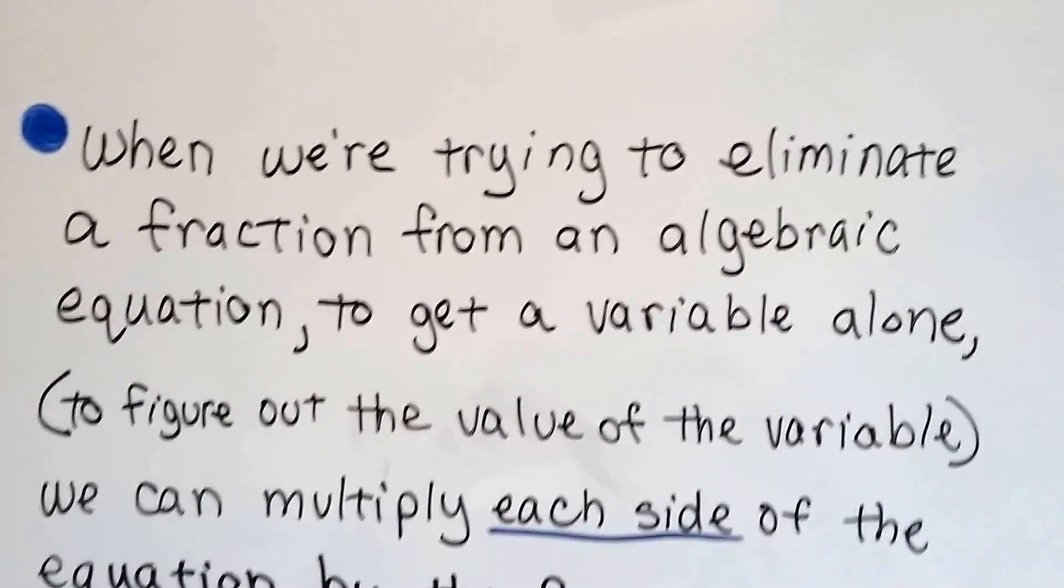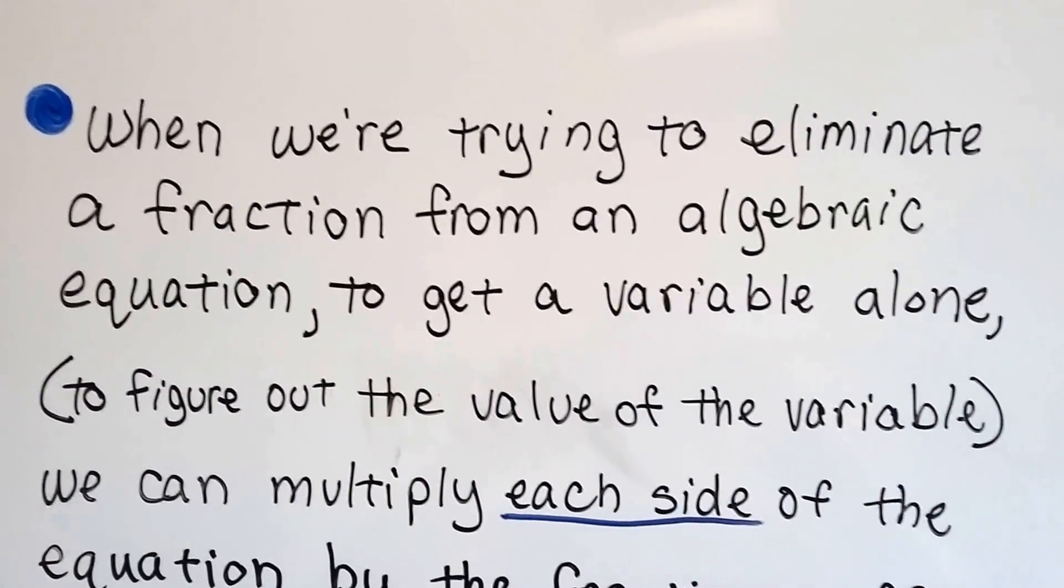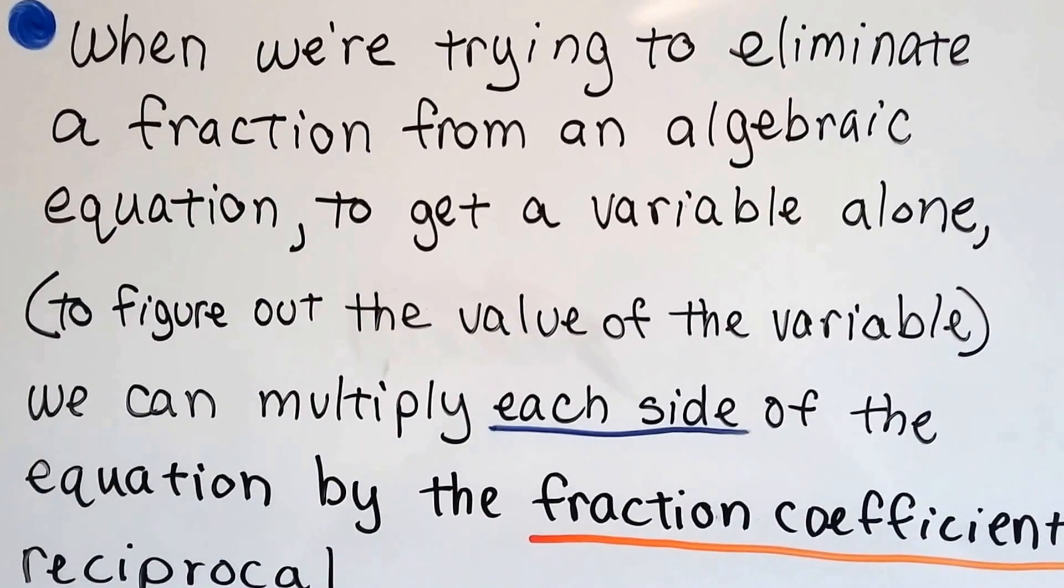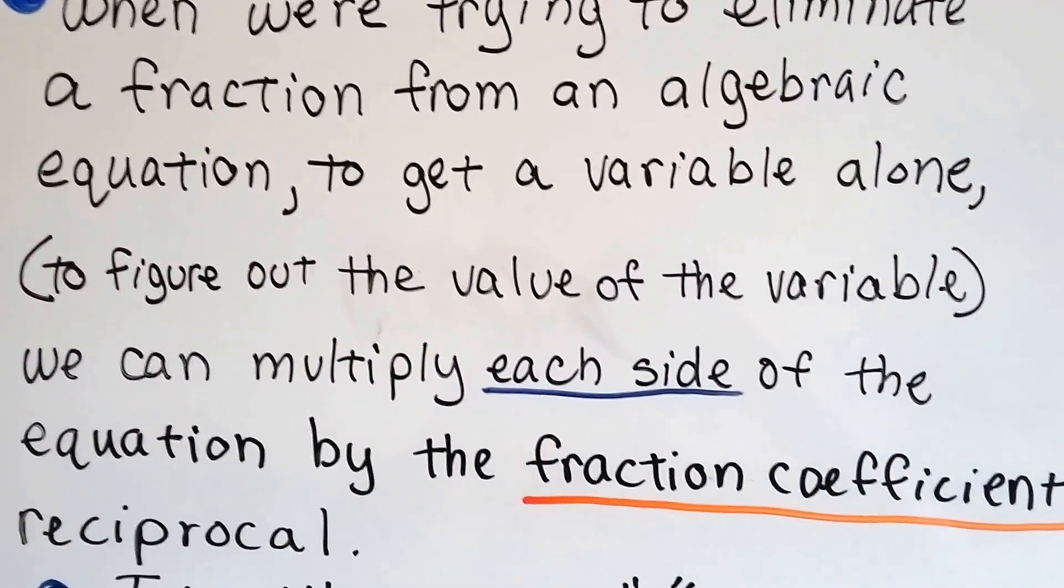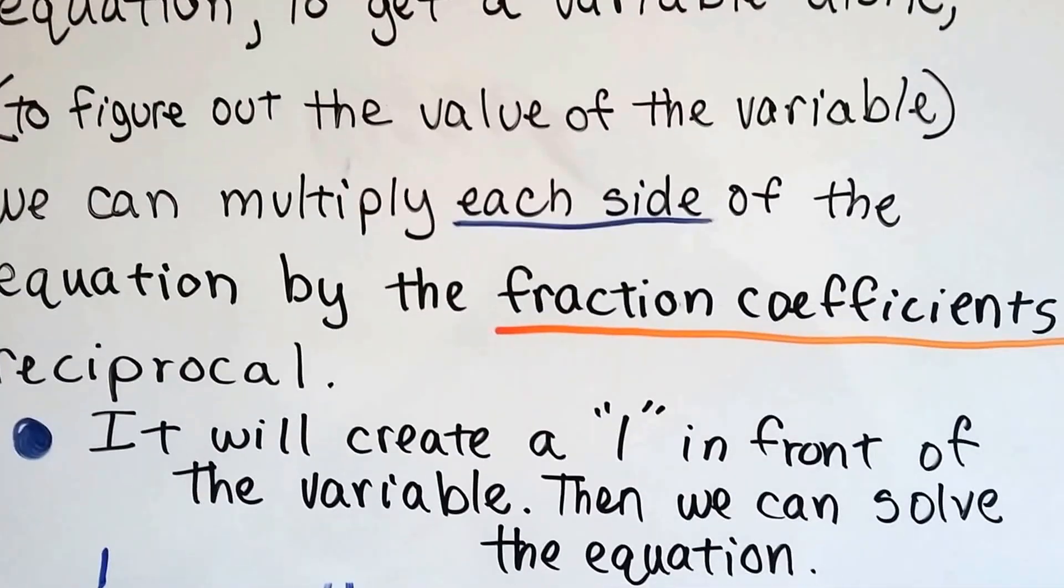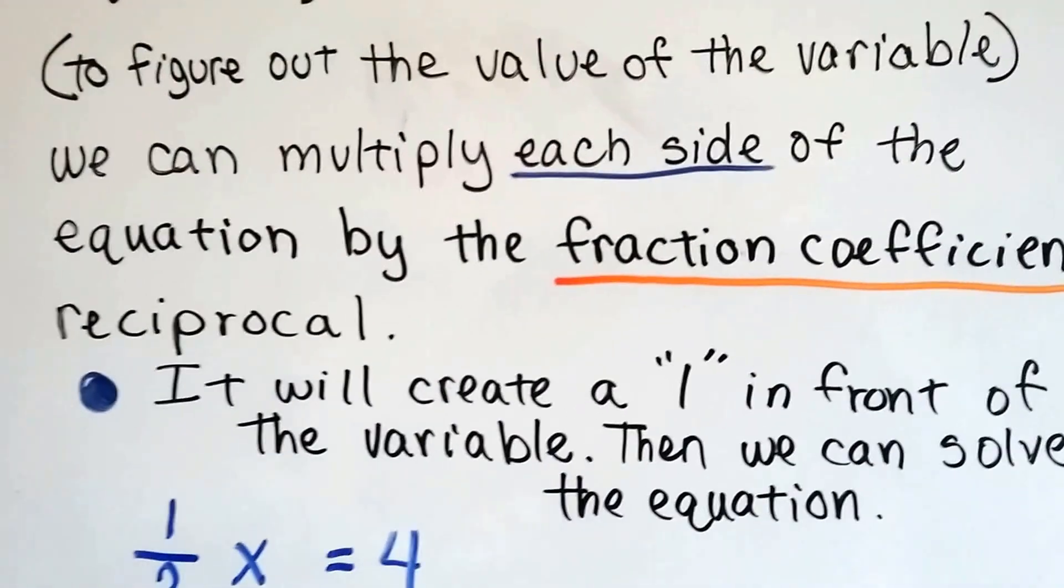So, when we're trying to eliminate a fraction from an algebraic equation to get the variable alone and to figure out the value of the variable, we can multiply each side of the equation by the fraction coefficient's reciprocal. It'll create a 1 in front of the variable, and then we can solve the equation. So watch.